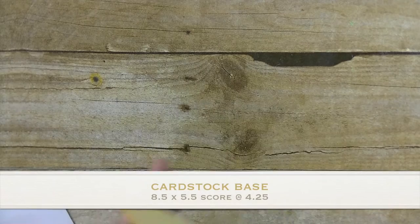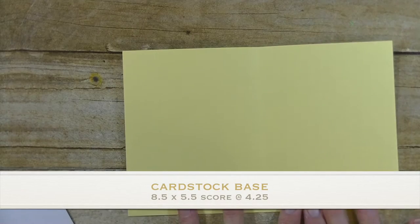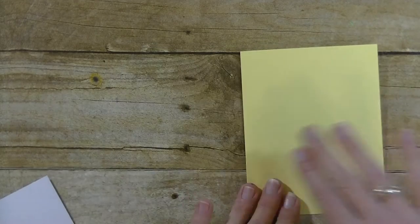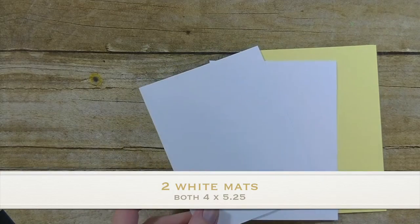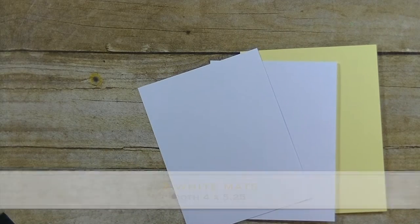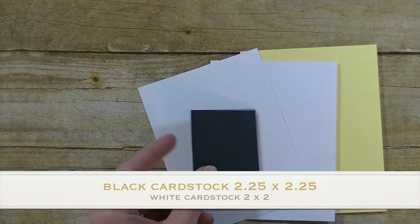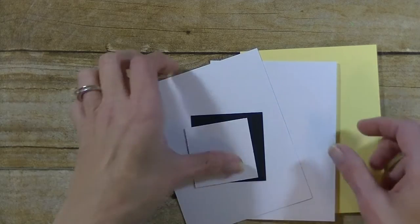The first thing you'll need is a piece of cardstock. This is 8½ by 5½ and I scored that at 4¼ to make our card base. Then we need two pieces of white cardstock. They both measure 4 by 5¼. A piece of black, this is 2¼ by 2¼, and a piece of white that is 2 by 2.